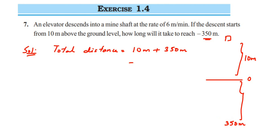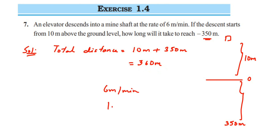This elevator has to travel 360 meters total. The rate is 6 meters per minute, meaning in every one minute it descends 6 meters. We need to find how many 6 meters are present in 360 meters to get the time, so we are going to divide 360 meters by 6.